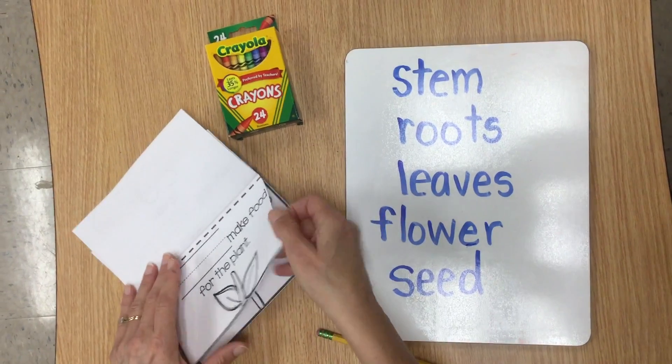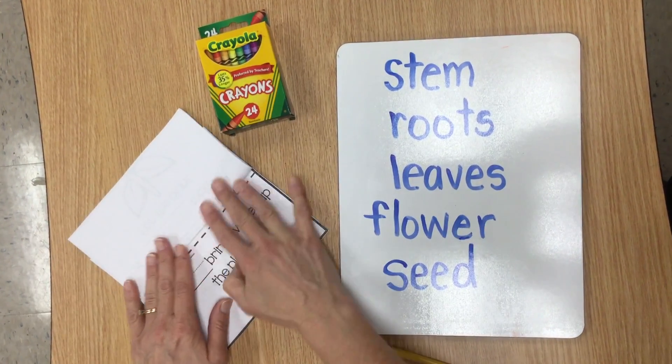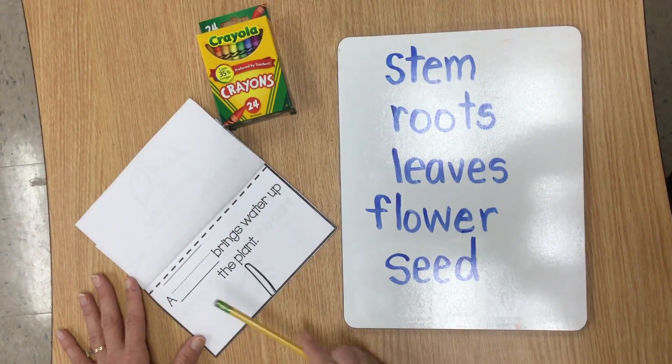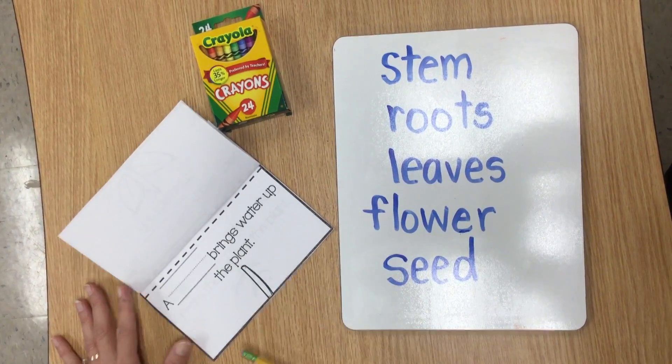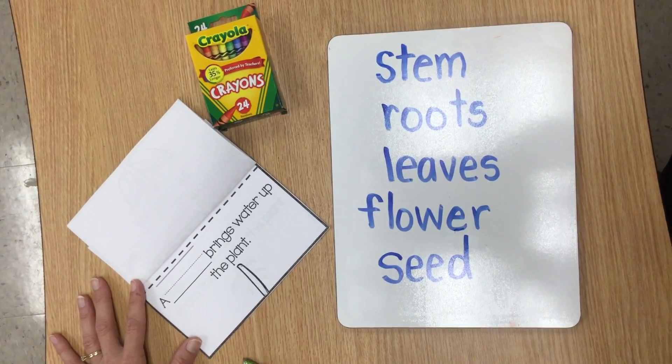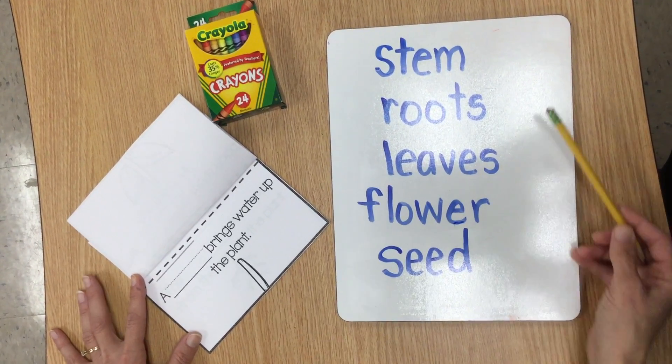Welcome back. I'm going to turn to the very next page and I'm going to read my sentence. A blank brings water up the plant. Well, here's my picture cue. Let's look at our vocabulary words.